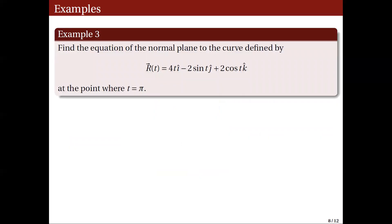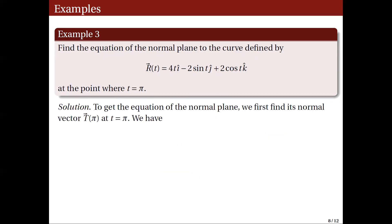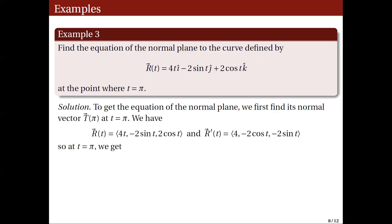Our next example is to find the equation of the normal plane to the curve r(t) = (4t, −2sin t, 2cos t) at the point where t = π. To get the equation of the normal plane, we first find its normal vector — the unit tangent vector T(π). We compute r'(t) = (4, −2cos t, −2sin t), and setting t = π gives r'(π) = (4, 2, 0), with length 2√5.